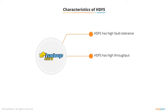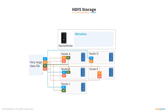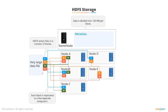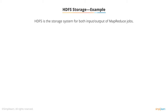The emphasis is on high throughput of data access rather than low latency. HDFS is also economical — it can be built on commodity hardware and heterogeneous platforms, which are low-priced and easily available. HDFS stores files in a number of blocks, each replicated to a few separate computers. The replication count can be modified by the administrator. Data is divided into 128 megabyte blocks and replicated across local disks of cluster nodes. Metadata controlling the physical location of a block and its replication is stored in the NameNode. HDFS is the storage system for both input and output of MapReduce jobs.